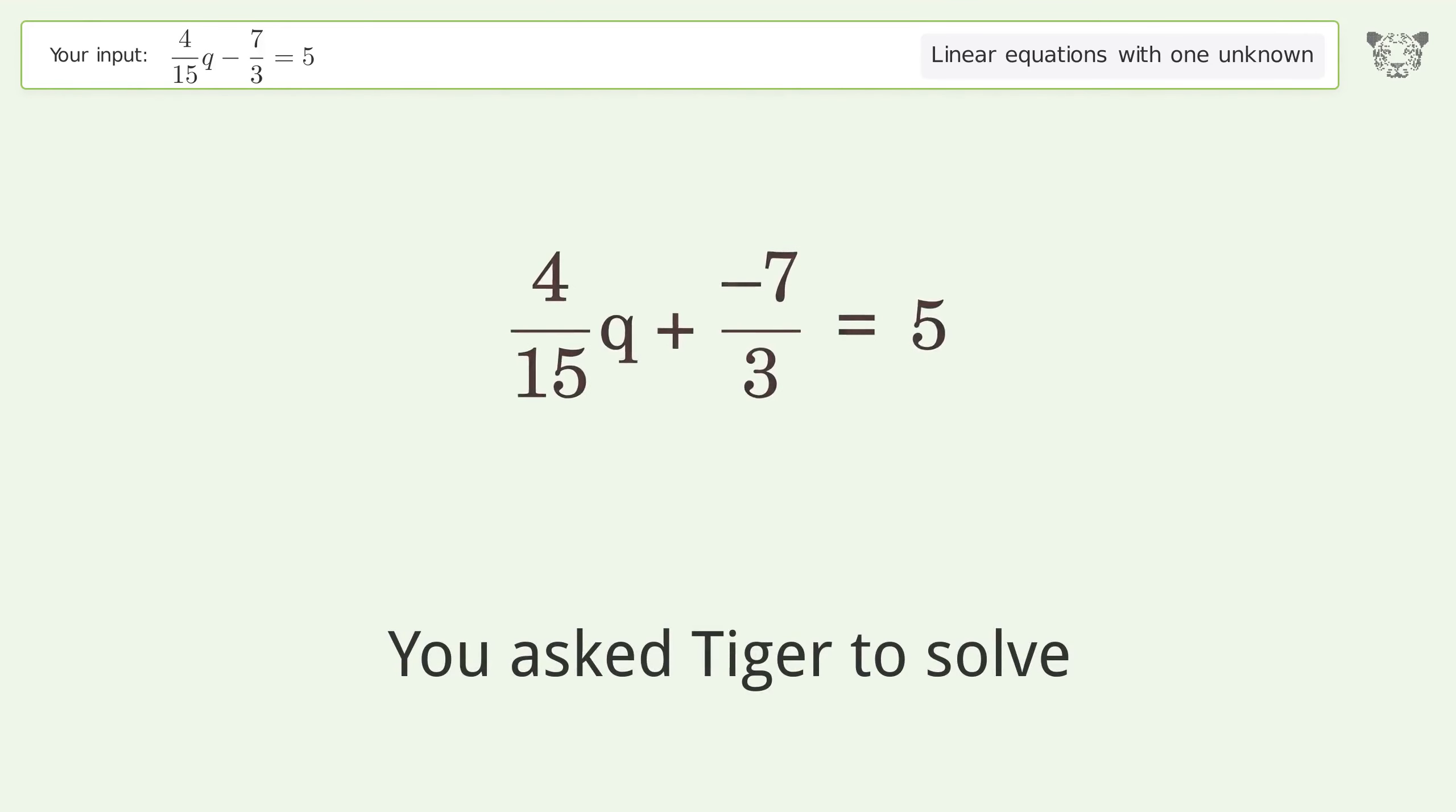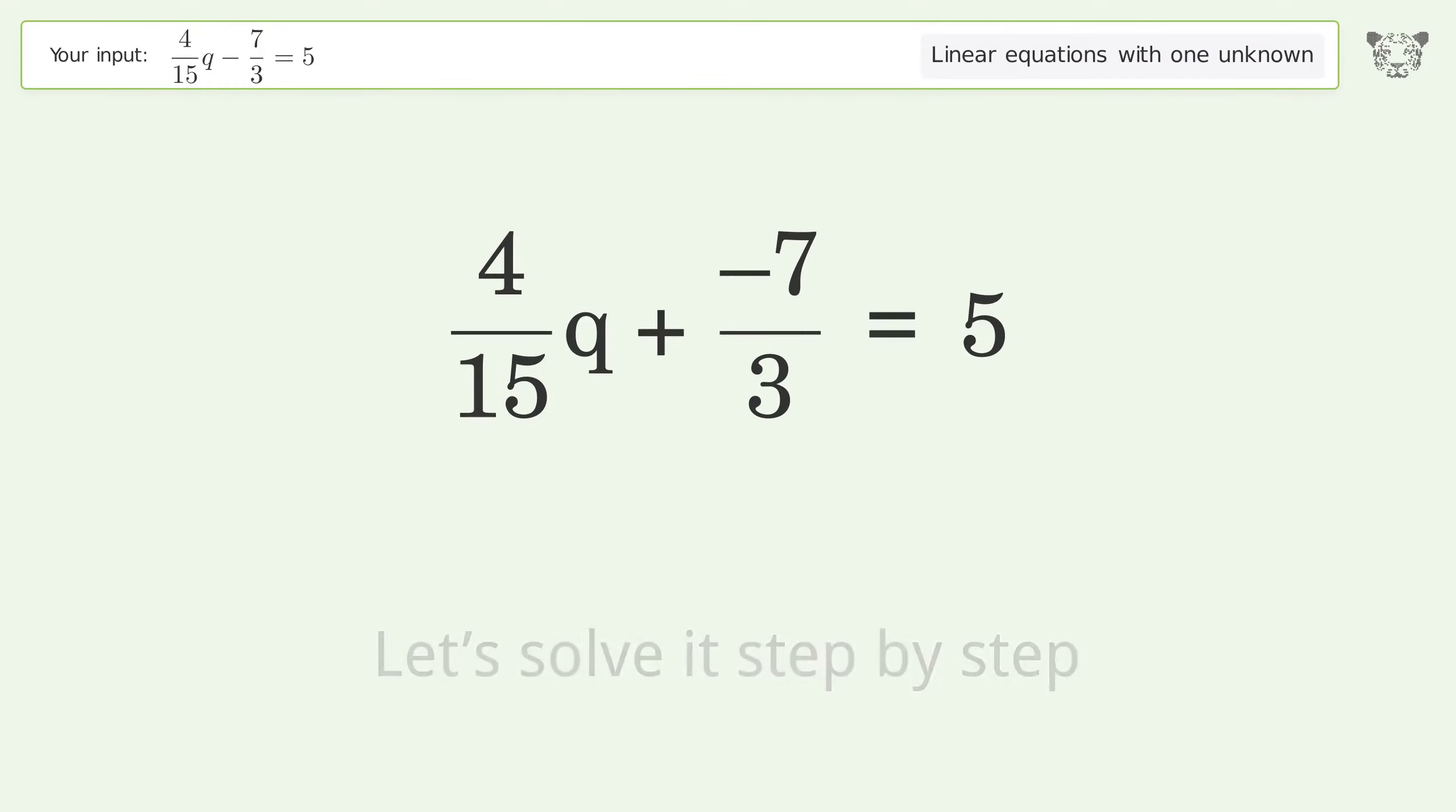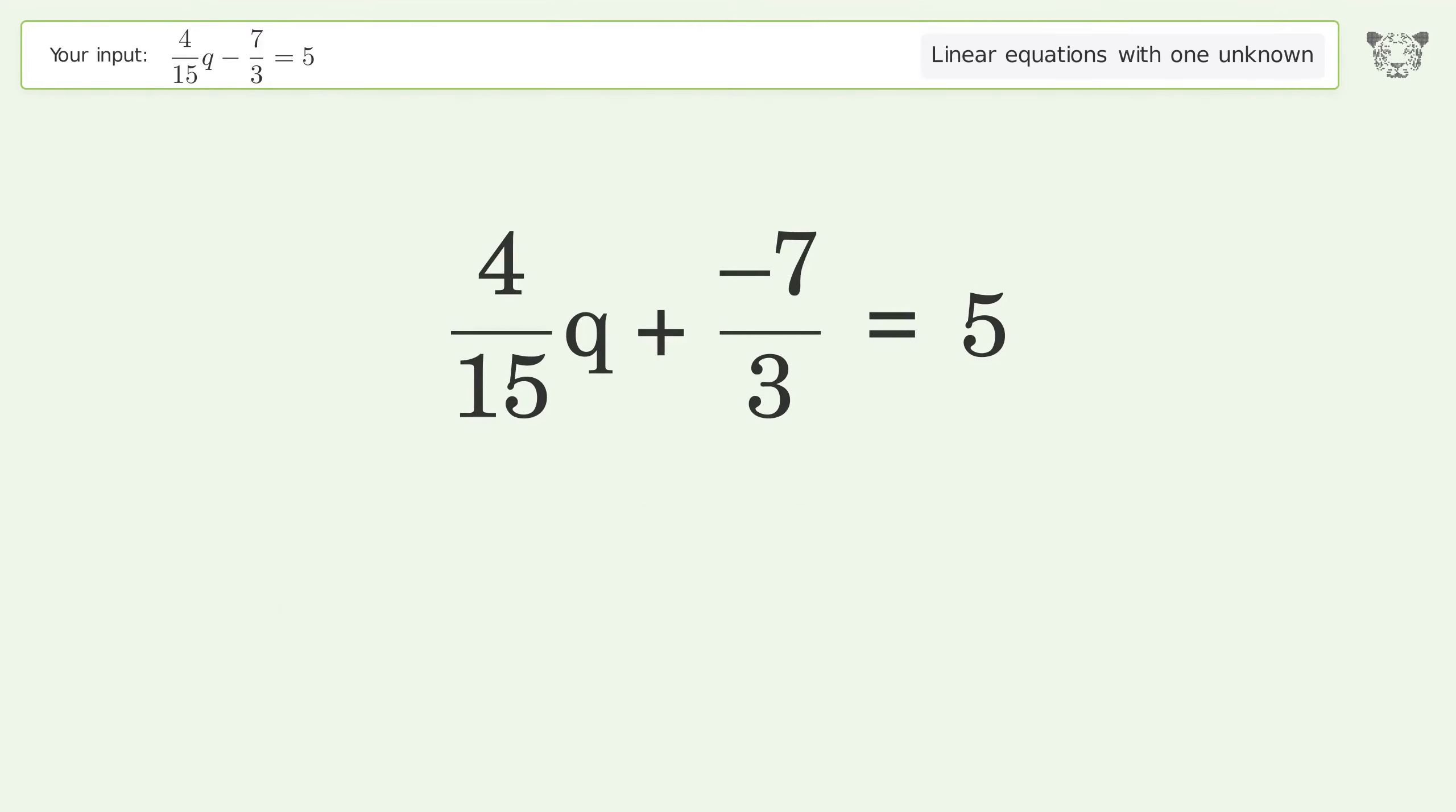You asked to solve this linear equation with one unknown. The final result is q equals 55 over 2. Let's solve it step by step. Group all constants on the right side of the equation. Add 7 over 3 to both sides.